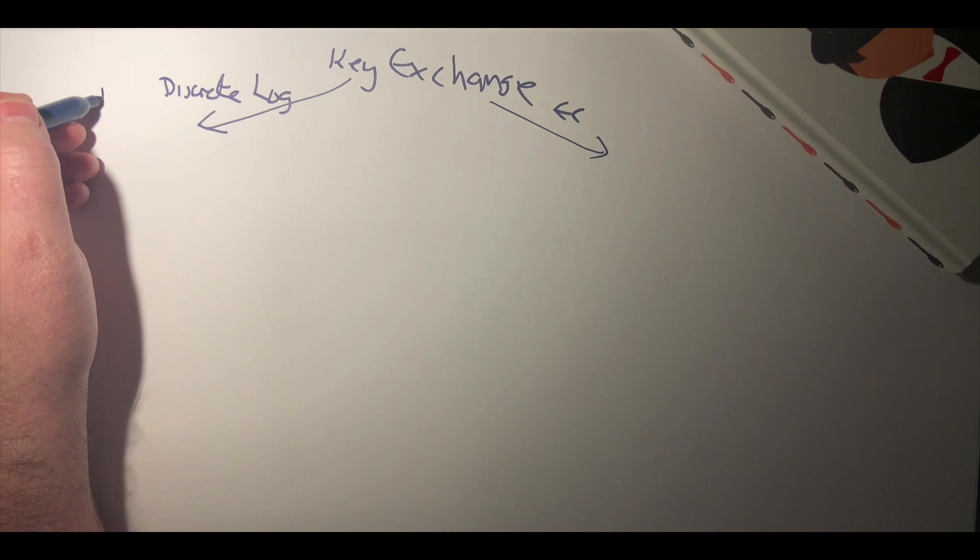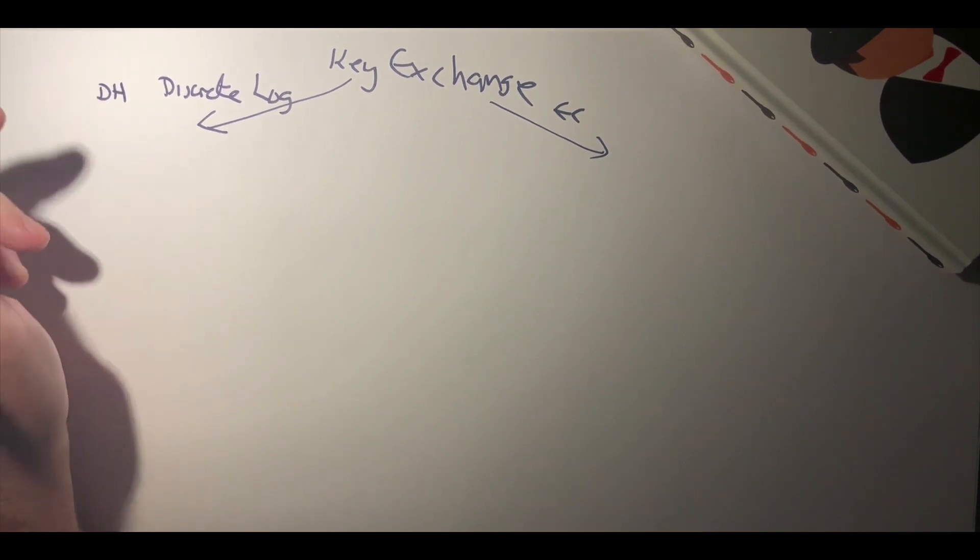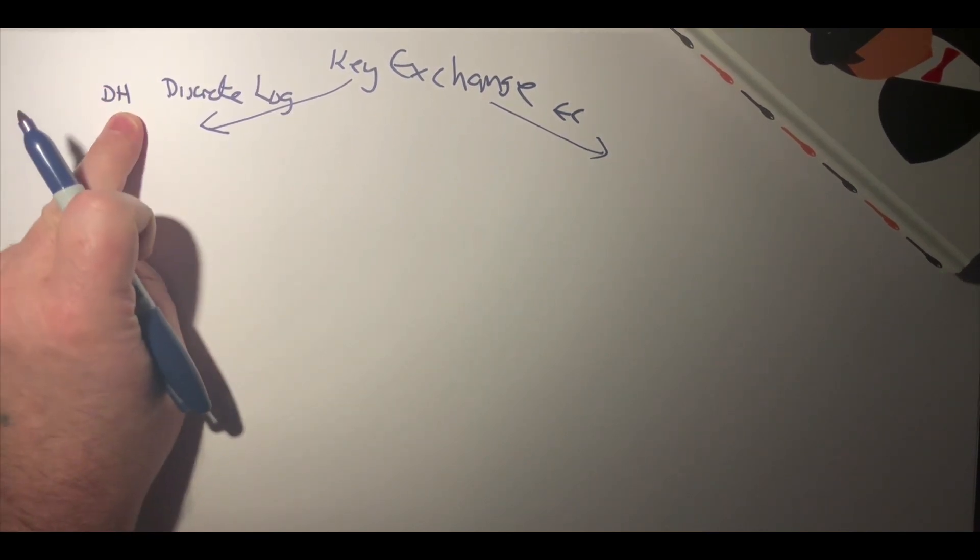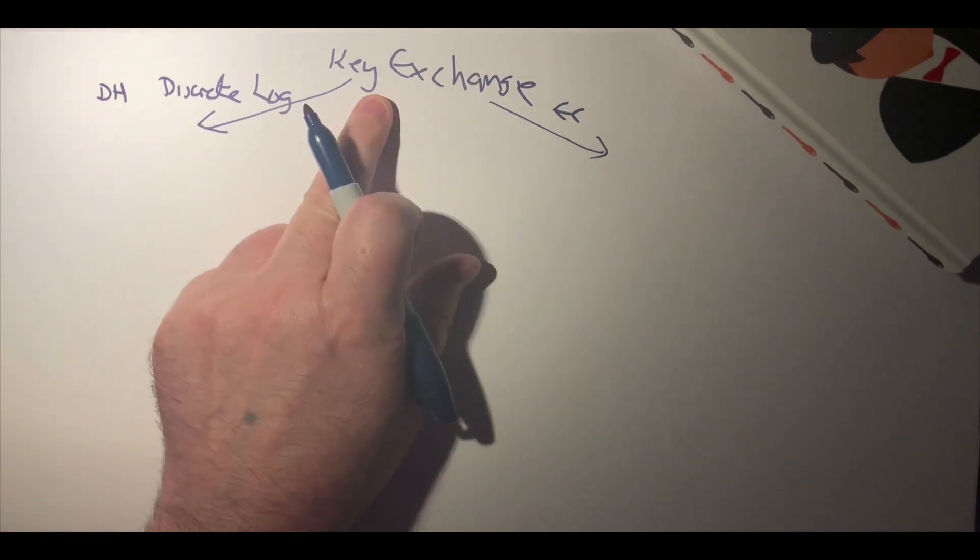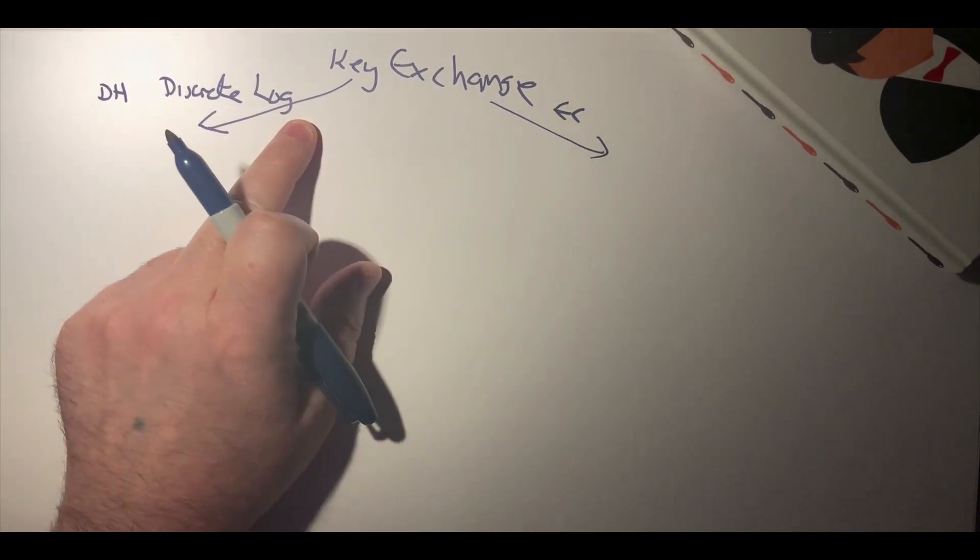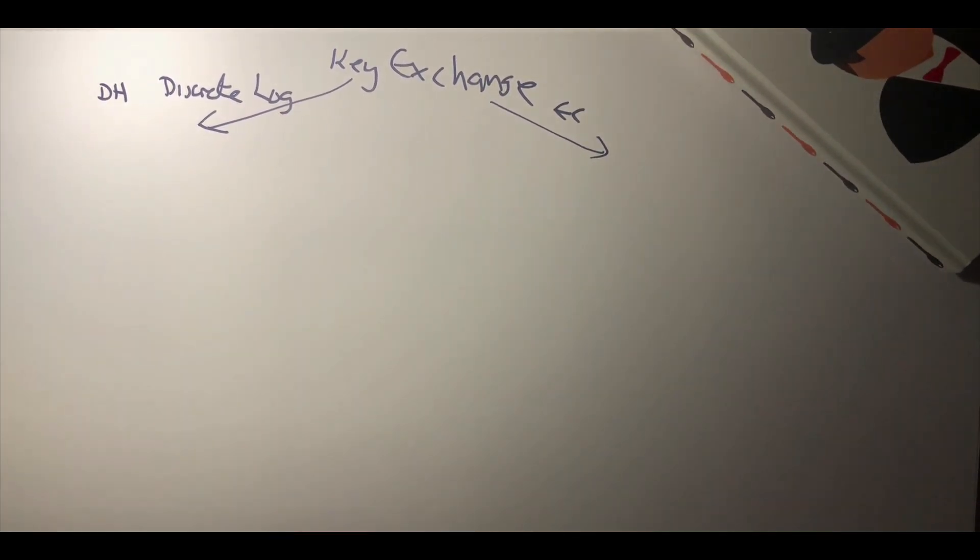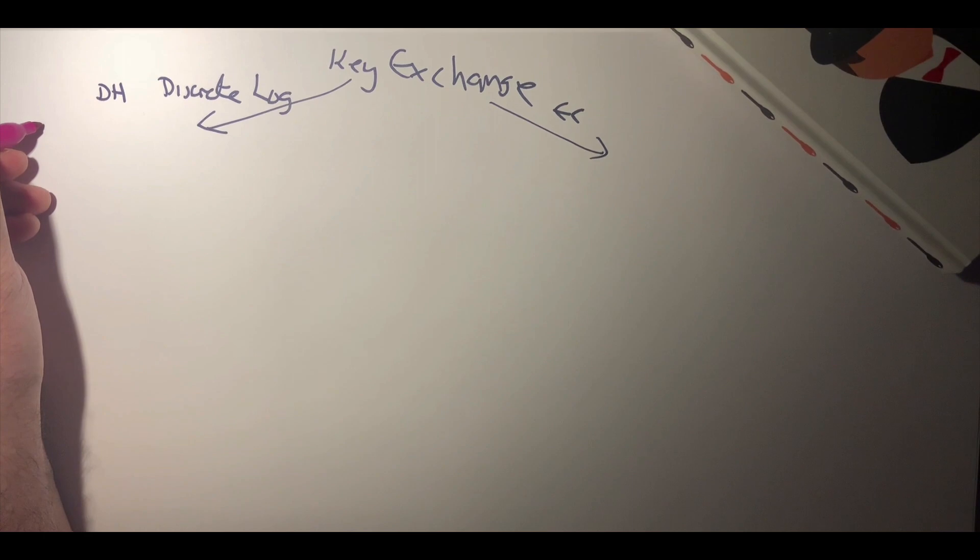So the first method we'll look at is known as the Diffie-Hellman key exchange method. It uses discrete logs, and when we look at discrete logs we think of Napier's logs.